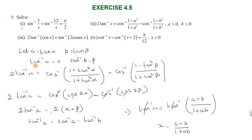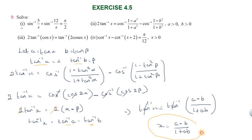Since α = tan⁻¹a and β = tan⁻¹b, we have tan⁻¹x = tan⁻¹a - tan⁻¹b. Using the subtraction formula, tan⁻¹a - tan⁻¹b = tan⁻¹((a - b)/(1 + ab)). Cancelling tan⁻¹ on both sides, x = (a - b)/(1 + ab). This is the final answer.